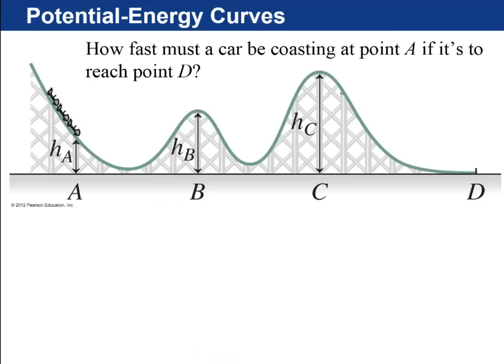Next is about potential energy curves. What is shown here to start this section is a roller coaster. You imagine you've got a roller coaster, the cars here are moving without any friction, and they don't have any engine on them or something, so they're just coasting along, speeding up as they go down, slowing down as they go up. And it says, how fast must a car be coasting at point A if it's to reach point D? So it starts here, it's going down with some speed. It has enough speed so that it gets over the first hill and it gets over the second hill.